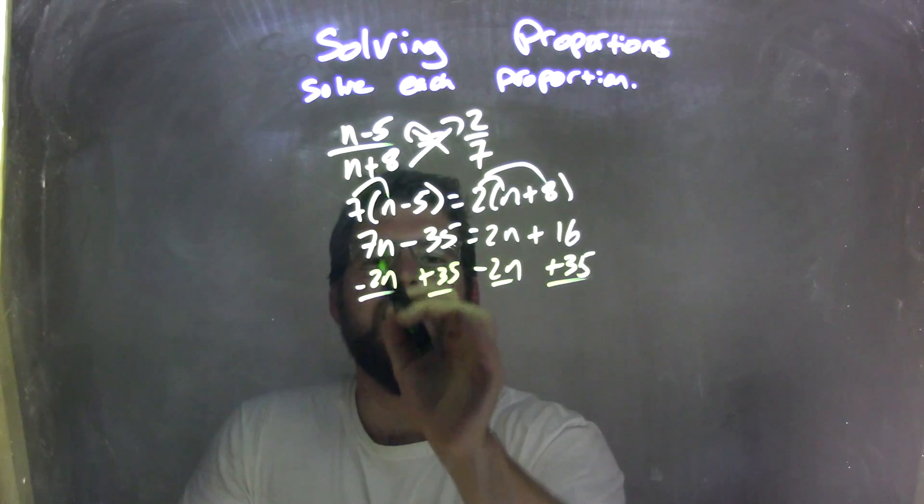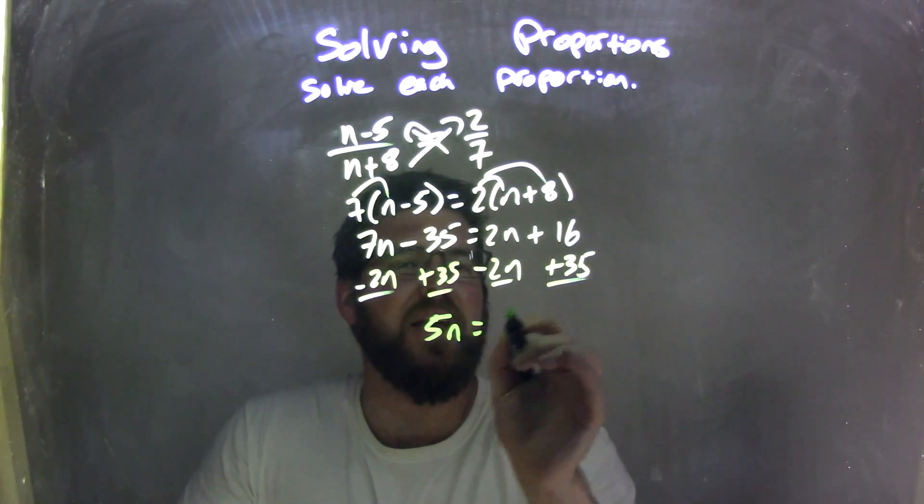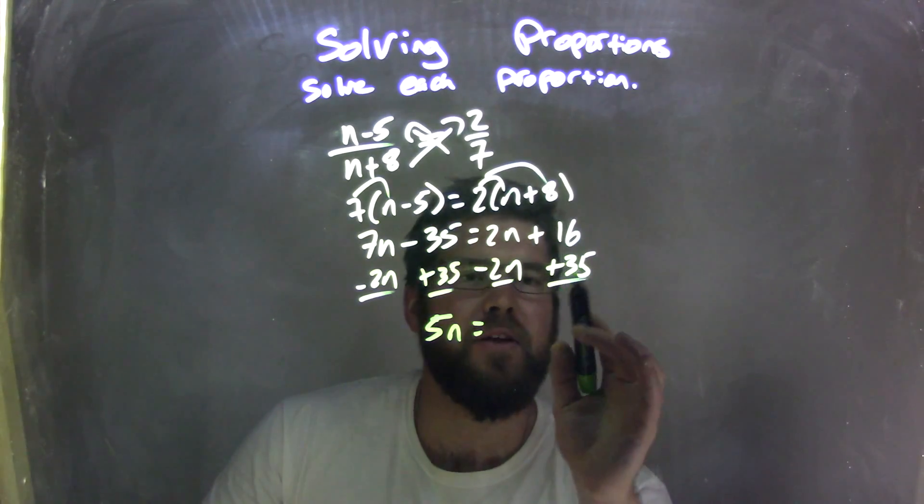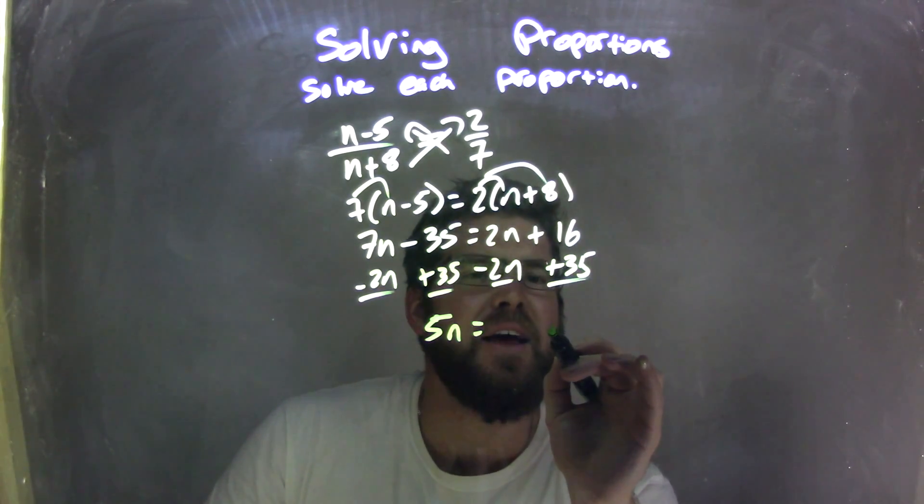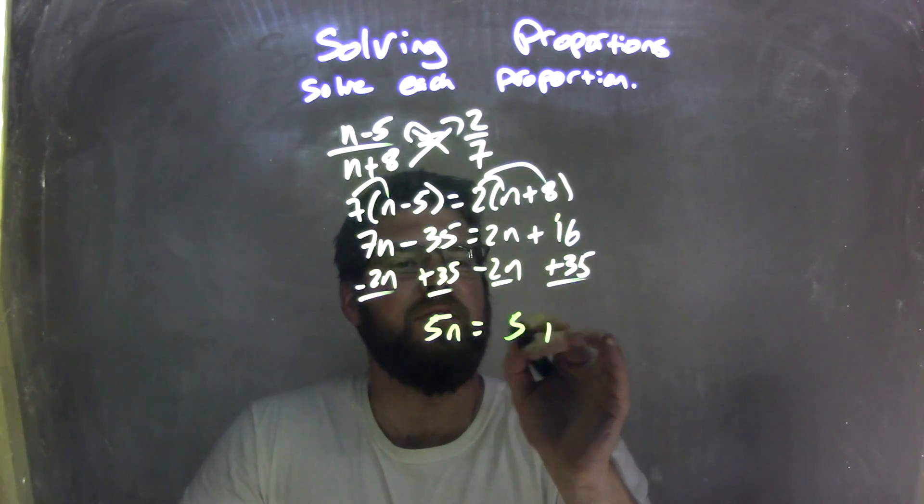Opposite of that subtraction there. 7n minus 2n is 5n, equals—16 plus 35. 6 plus 5, let's bring it down here, is 11. Carry that 1, that's up there. 3 plus 1 is 4, plus 1 is 5, so we have 51.